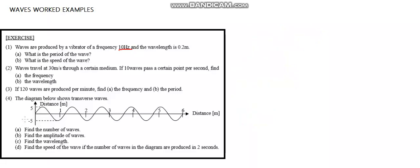Question 4: the diagram shows transverse waves with distance in meters. Find the number of waves. To form a wave, you need a crest and a trough. Counting the complete waves in the diagram — one, two, three, four, five — so there are five waves.